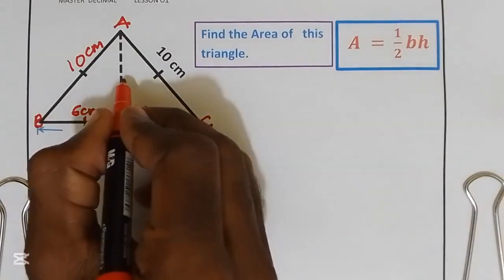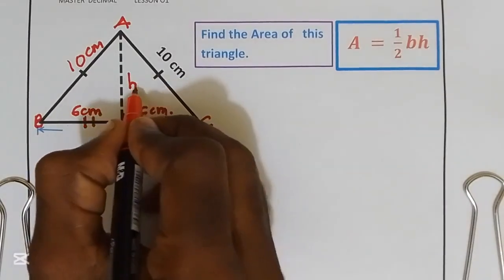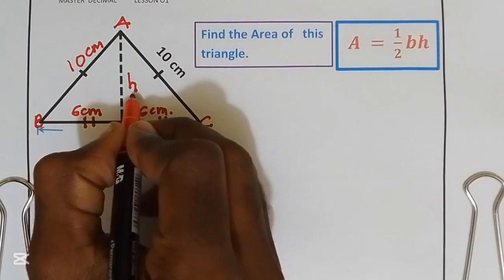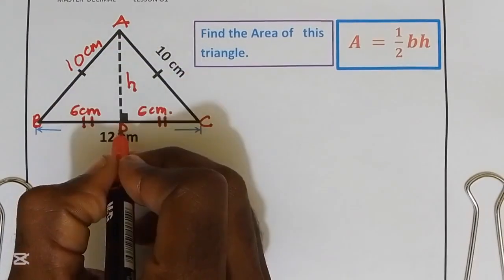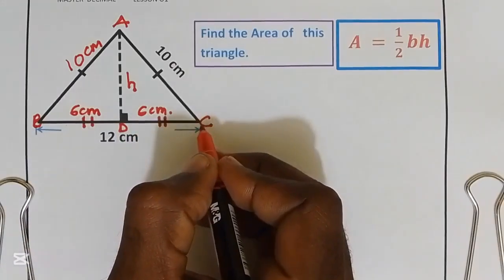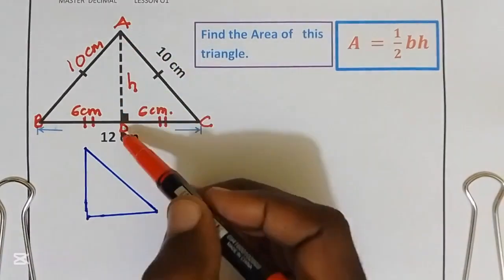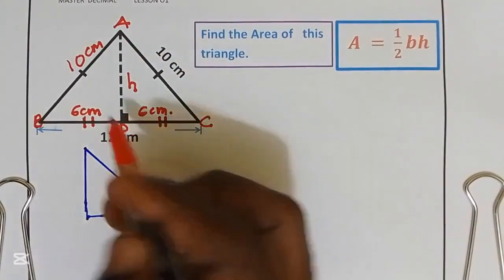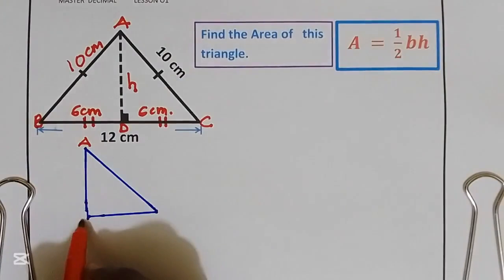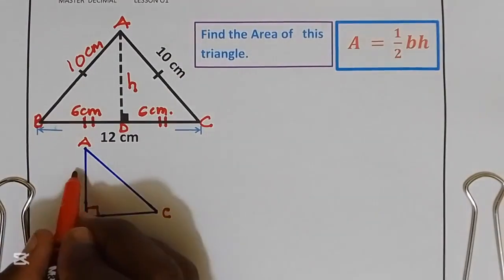Remember, we don't have the height, and we can't find the area if we don't have the height. So we are going to find the height by using triangle ADC. Triangle ADC is a right angle triangle, and we are looking for the height.